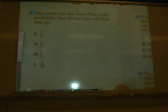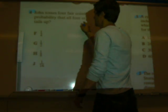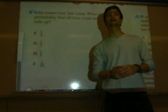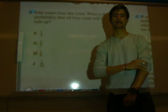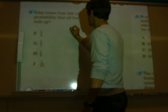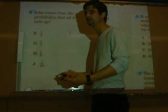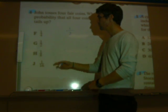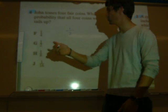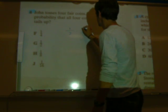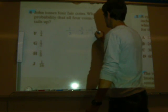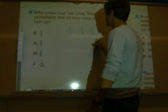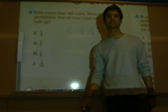Alright, so John tosses four fair coins. What's the probability that all four coins will land tails up? So he's tossing four coins. What's the probability that the first coin will land tails up? Well, that one's obviously one and two, right? It's a 50-50 shot, either heads or tails. What's the probability the second coin will land tails? That's also one and two. What's the probability the third coin will land tails? One and two. Fourth coin, one and two.